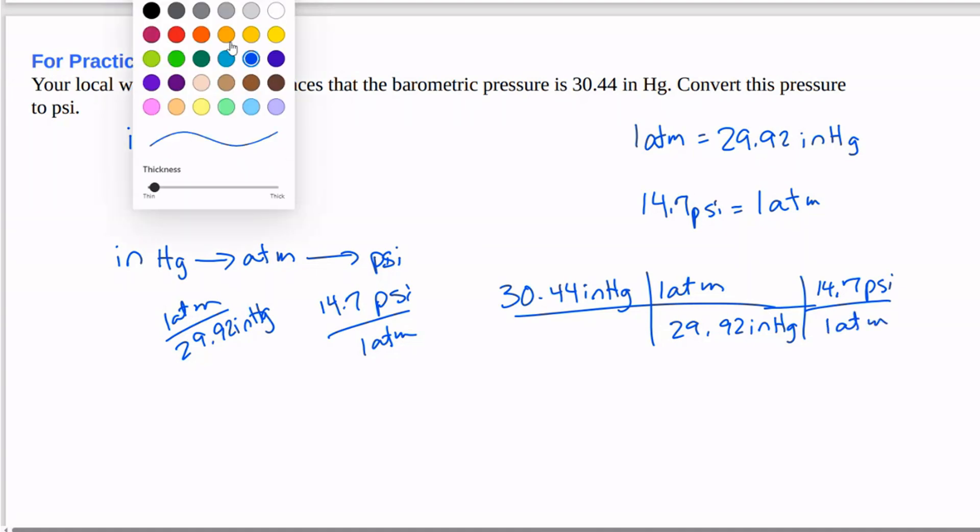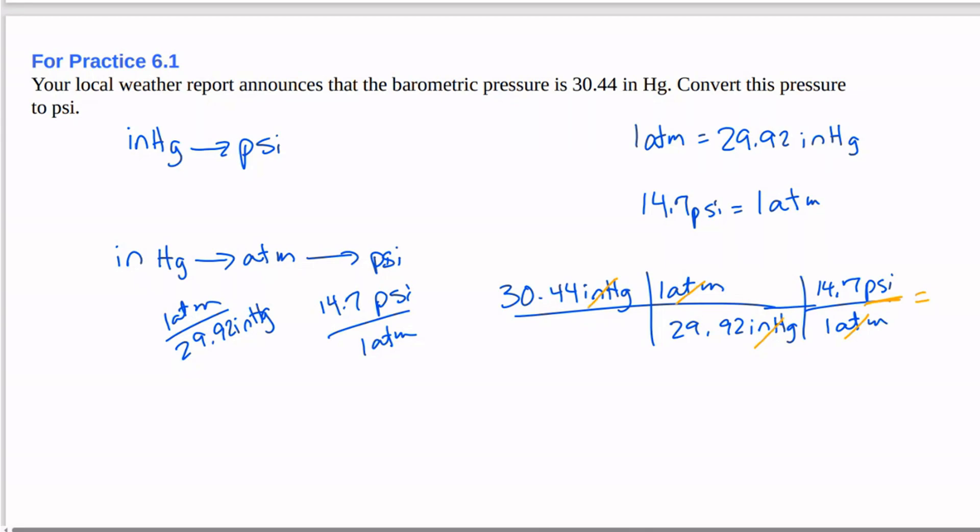So let's cancel our units. So atmosphere cancels, inches of mercury cancels, and we're left with PSI.